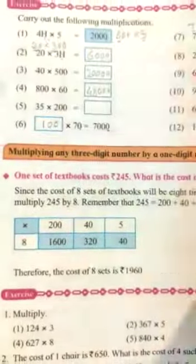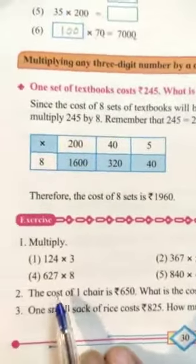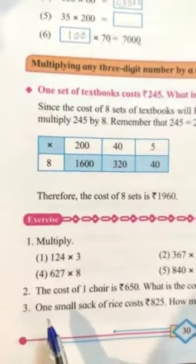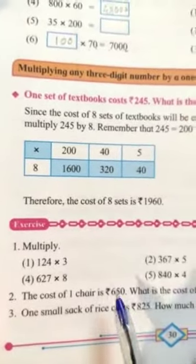Now we will see the word problem here. Second word problem I have solved. Third you have to solve. The cost of 1 chair, 1 chair cost is Rs. 650.